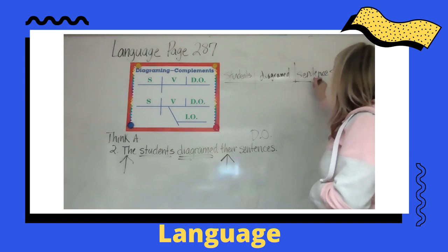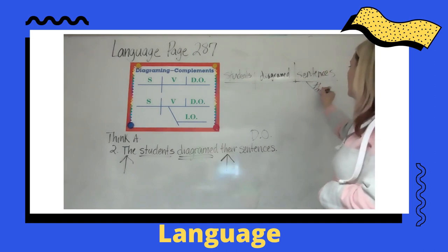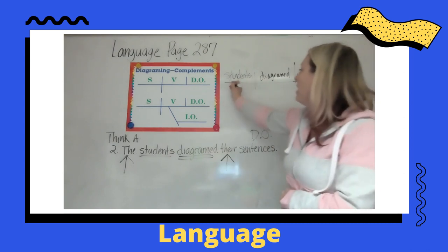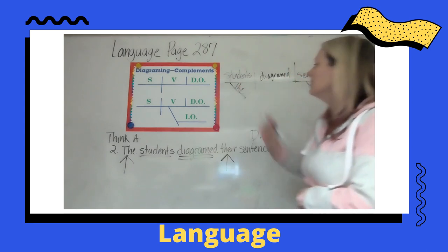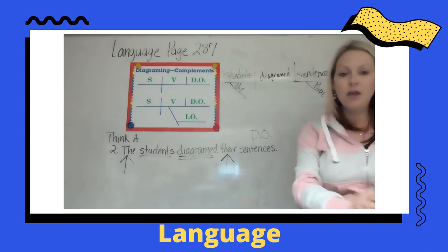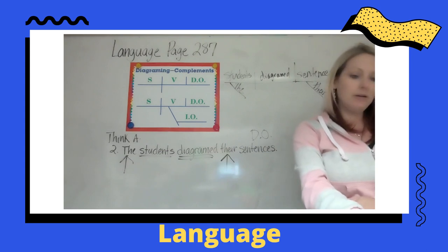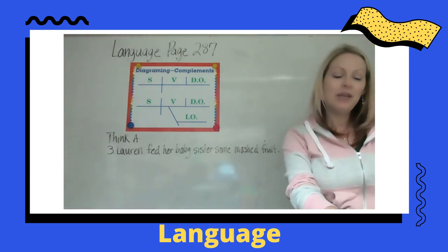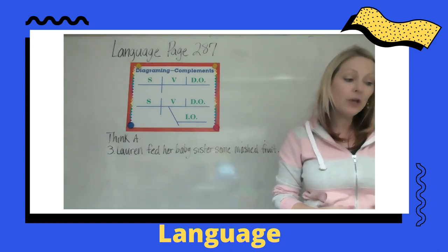Which kind of sentences? Our adjective 'their' comes off on a diagonal line, and then 'the' for the students is our other adjective. Now let's take a look at number three: 'Lauren fed her baby sister some mashed fruit.'